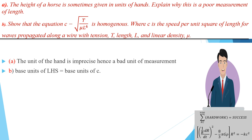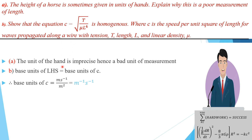Now for part B, to discuss the homogeneity of this equation, the trick here is to break student stereotypes. You're used to seeing c as the speed of light, but in this question c is defined as speed per unit square of length. So c is no longer just meters per second — its base unit is meters per second per meter squared. We want to investigate that every term in this expression has the same base unit, so the base unit of c here is meters per second per meter squared, which simplifies to per meter per second.